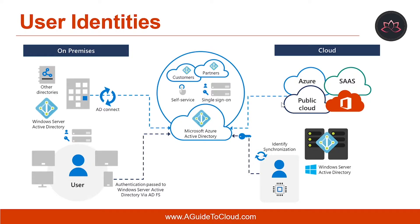The first one is cloud-only. Cloud-only identities are exactly as the name suggests — the user identity only exists in the cloud, and all password management and policy control are done through Azure AD. The second option is directory synchronization with pass-through authentication, which provides a simple password validation for Azure AD authentication services. Another option is single sign-on with Active Directory Federation Services, or SSO with ADFS. The SSO option hands over authentication control to your directory service, so users no longer authenticate against Azure AD but against your ADFS.